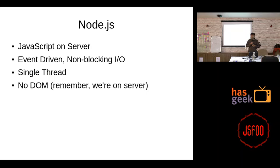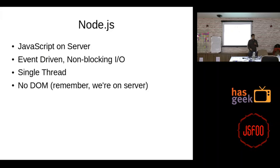The event loop dispatches events: it gets a request to fetch data from the database, asks I/O to do that, comes back, executes the next operation, and when I/O completes, a callback fires. It's a single-thread event loop. The biggest difference between Node and browser JavaScript is that in Node you don't have a DOM — since it runs on the server, not in the browser.